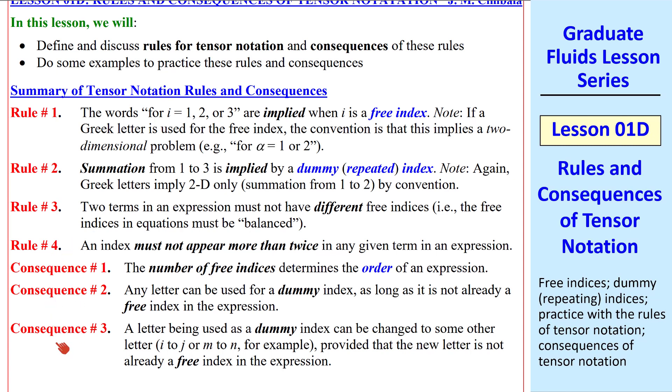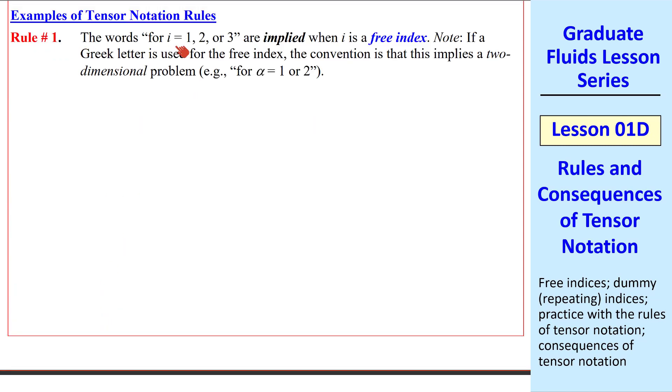I'll discuss each one in detail, so I won't read these over now. Rule number one, the words for i equal 1, 2, or 3 are implied when i is a free index. Here's a quick comment about Greek letters. Some people use the convention that if Greek letters are used for the indices, like alpha or beta, then it's a 2D problem. So we mean 1 or 2 rather than 1, 2, or 3. Just keep in mind that this is not a universal convention, but it is used by some authors. So you must be careful when you see Greek letters used as indices.